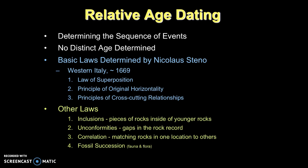This is one of the two techniques that we use to determine the age of events during Earth's history. As we talked about before, relative age dating gives us the sequence of events, and it has no distinct age that's determined, but it just tells us the ordering.